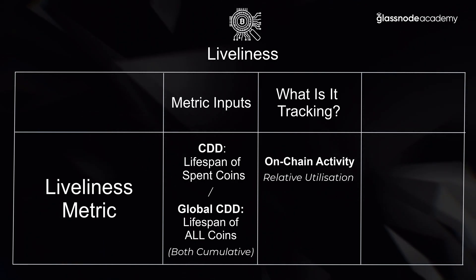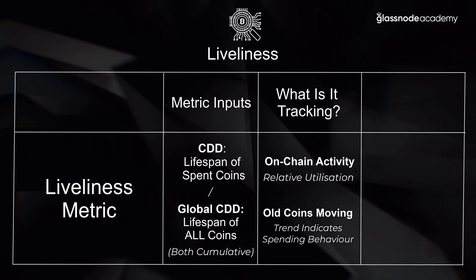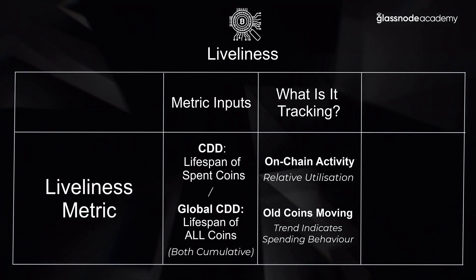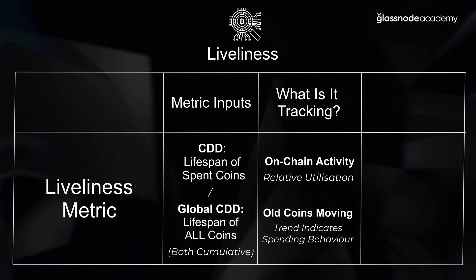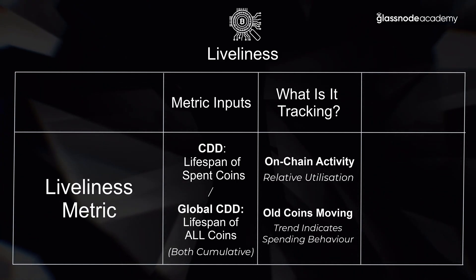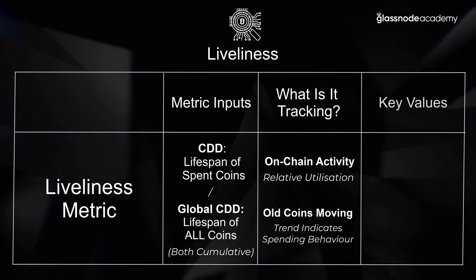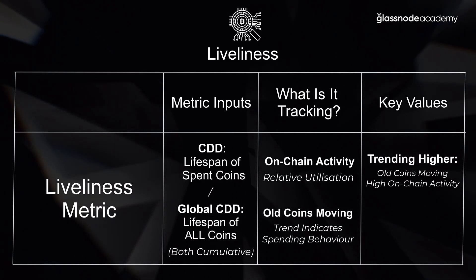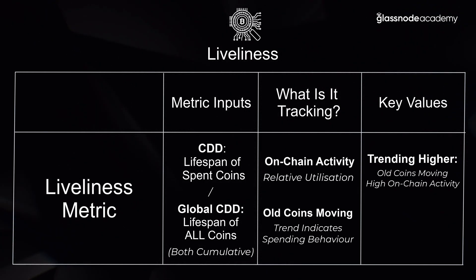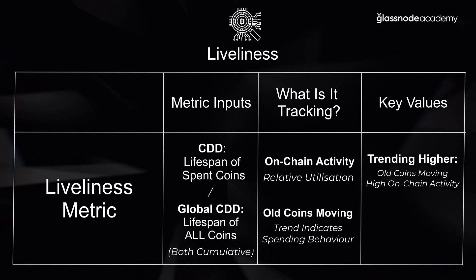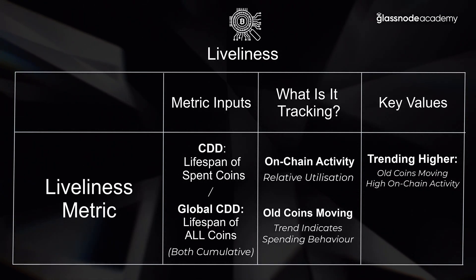When liveliness is moving, it's telling us something about old coins moving, because we get more coin days destroyed when old coins — ones that have accumulated long lifespans — are spent. We're really looking at the trend of liveliness. When it's trending higher, it means more of those old coins are moving. It could suggest something about smart money and their actions, and it's symbolic of high on-chain activity — more activity relative to the global lifespan.